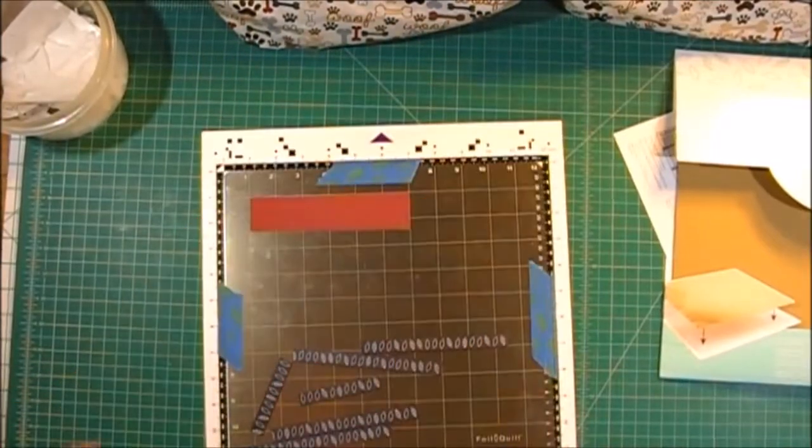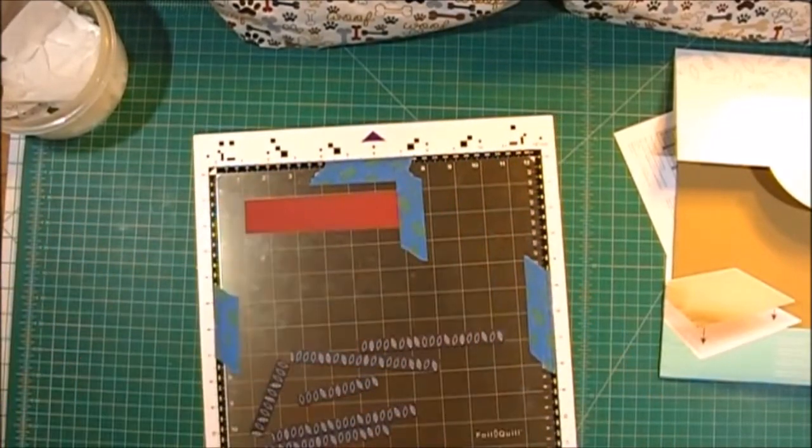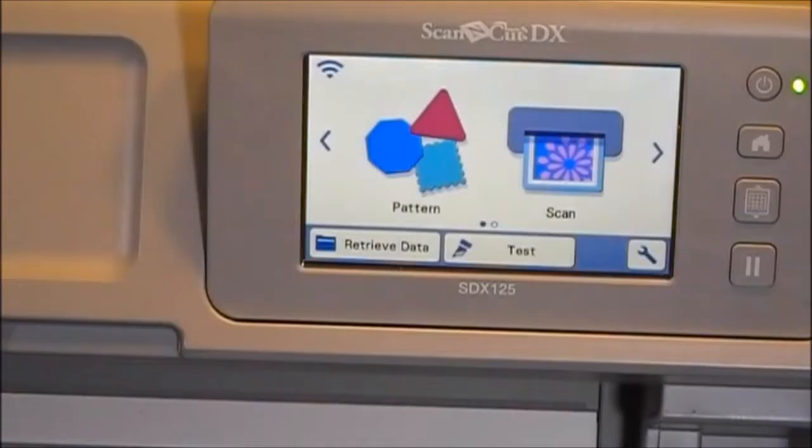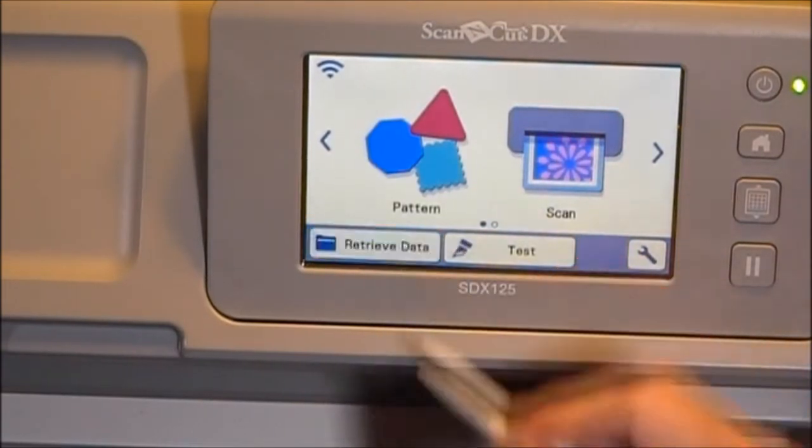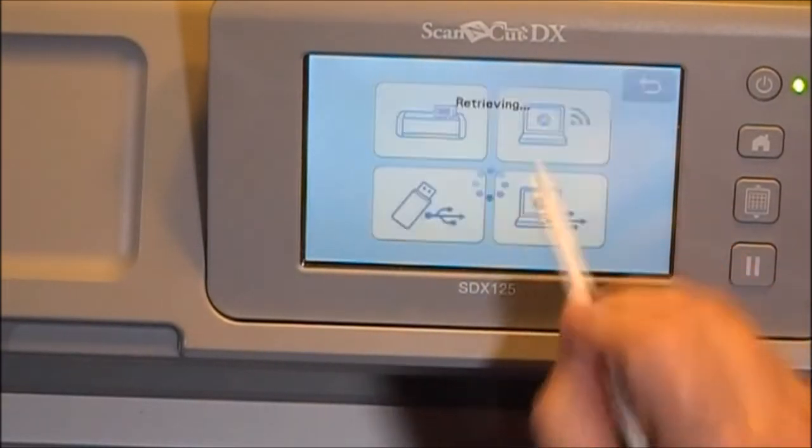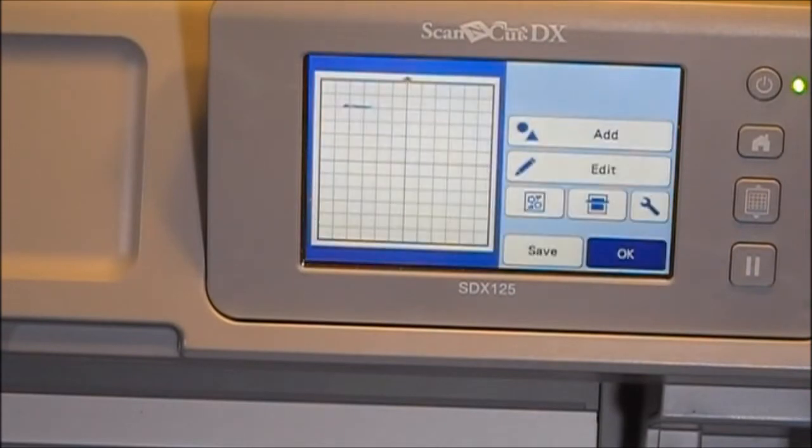And I'll tape the piece of card stock I'm going to use to foil onto the mat. And at my Scan and Cut, I'm going to retrieve data from the internet. And there is my sentiment.